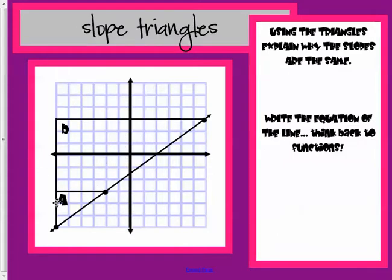So, if I look at this one, I'm looking at the rise, how much it's going up and over. So, A is going up one, two, three, plus three, and over one, two, three, four, plus four. So, three over four.